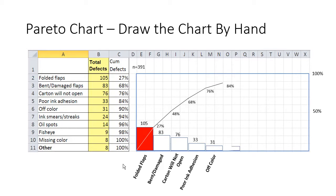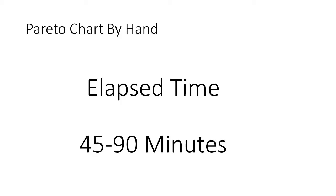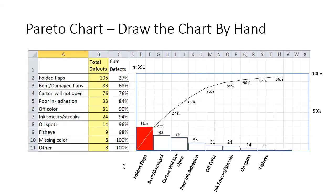And as you can see, this takes a while. Here I'm doing it a little bit more automatically, but if you try to do this by hand, we have one professor who has his students do it — it takes them anywhere from 45 minutes to an hour to actually calculate and draw a Pareto chart by hand. So this gives you some idea of how long it can take to draw a simple Pareto chart, although it's really not that simple.